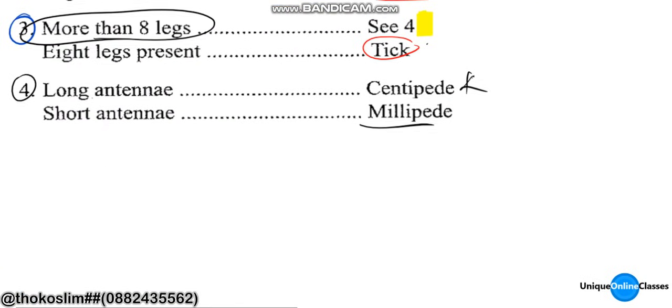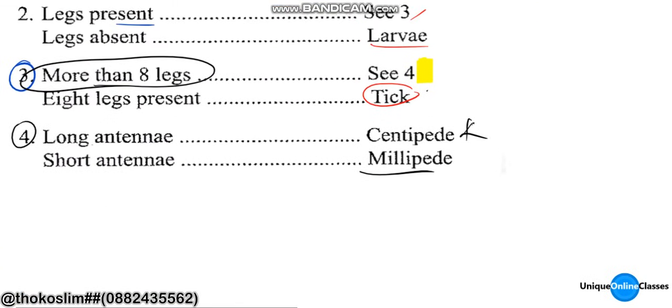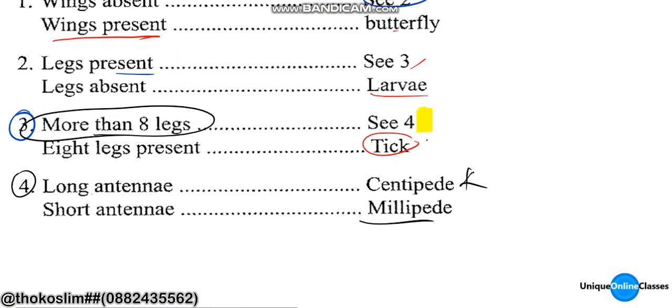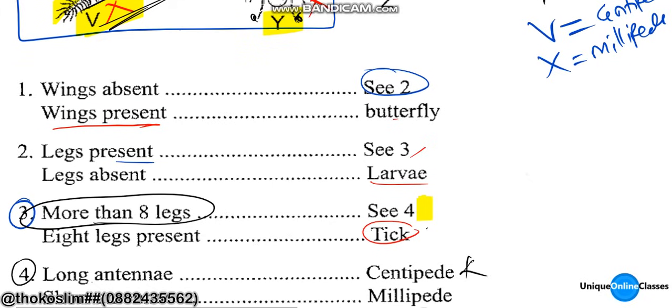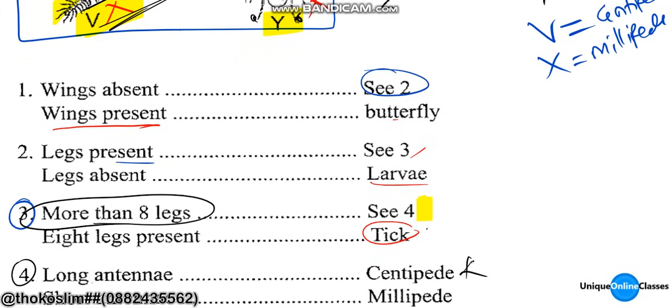So that's it. This is how we construct a dichotomous key. If you enjoyed this video, don't forget to subscribe to my channel. That's it for this video — thanks for watching and have a lovely day.